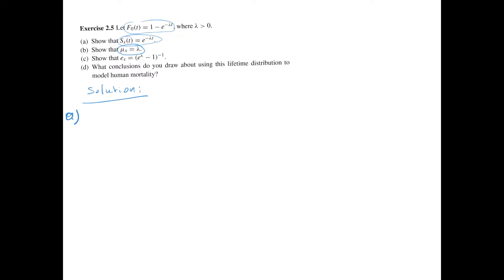Recall that f0(t) is the distribution function of the random variable t0, so it's the probability that t0 does not exceed small t. Then the survival function s0(t) is 1 minus the distribution function, because it's the probability that you exceed t, so we find the expression e to the power minus lambda t for the survival function.